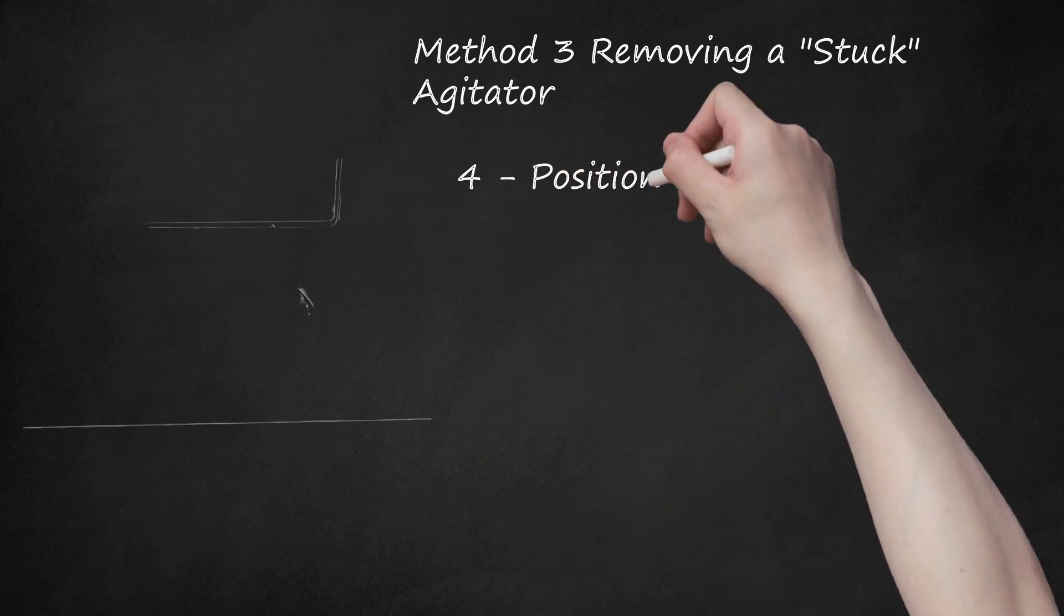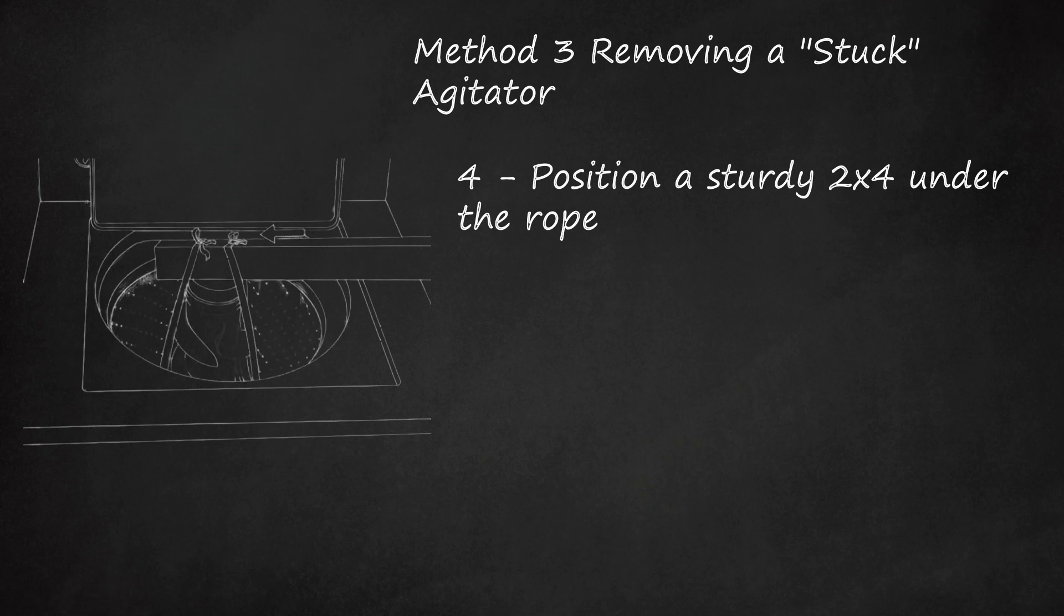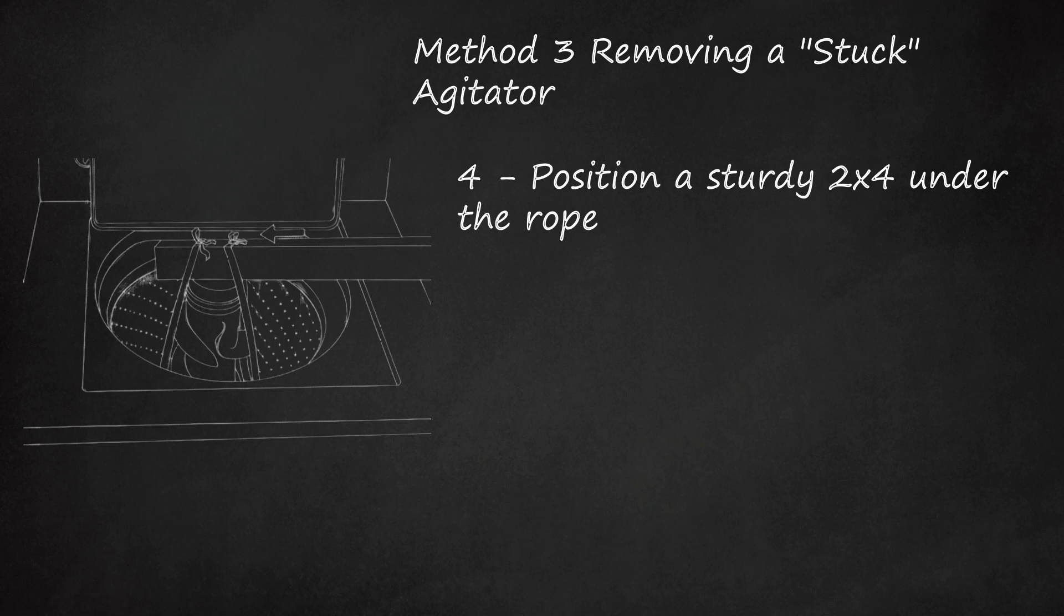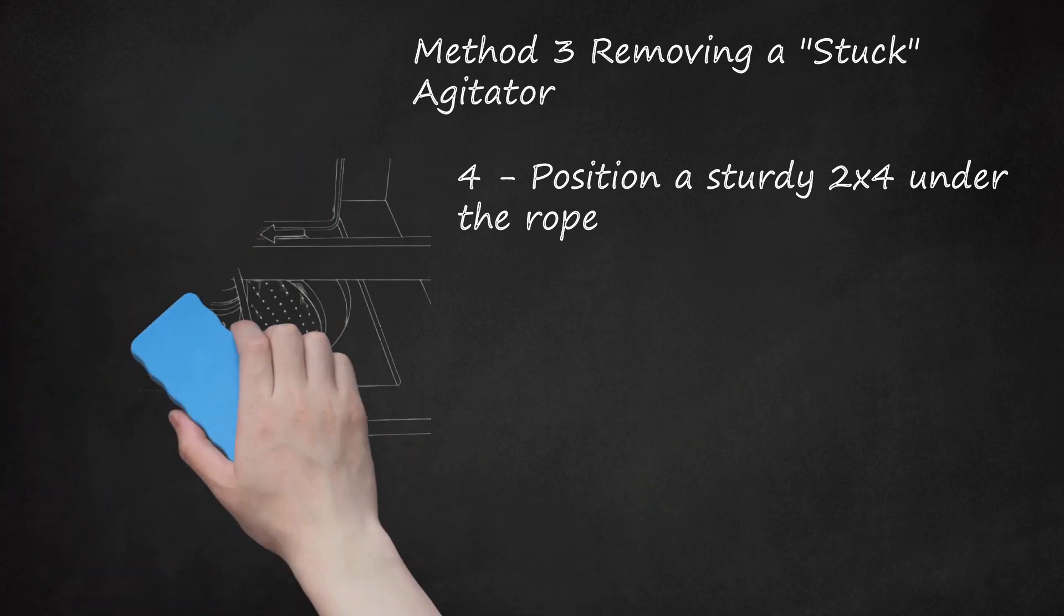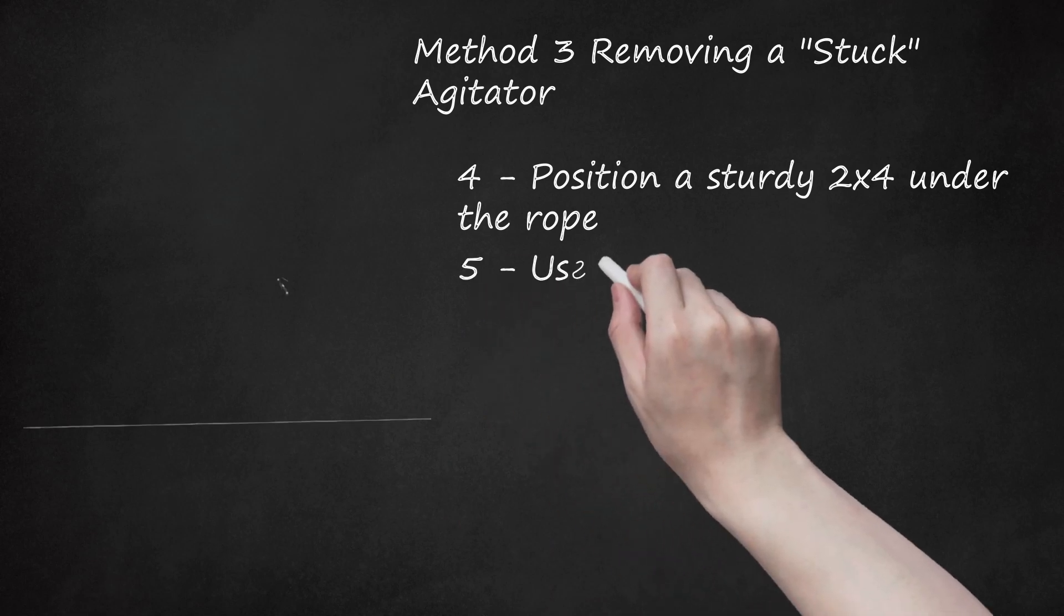Step 4: Position a sturdy 2x4 under the rope. Grab a 2x4 plank about 5 feet long. Loop the ends of the rope over the 2x4 and tie them securely in place around the wood so that they won't slip. To protect the finish on the edge of your washer from the pressure of the 2x4 in the next step, put a folded towel underneath it.